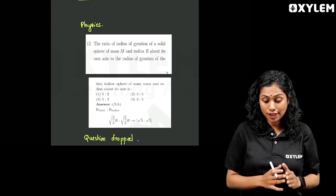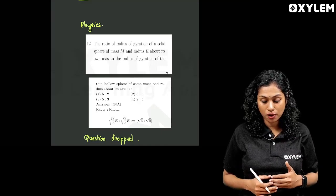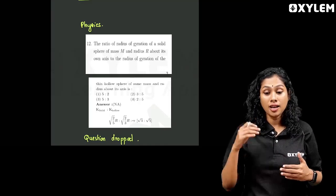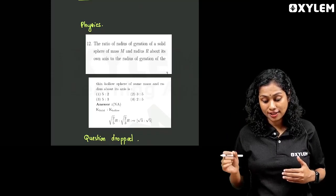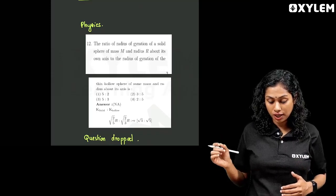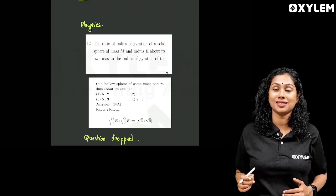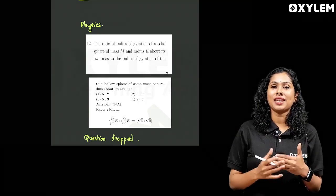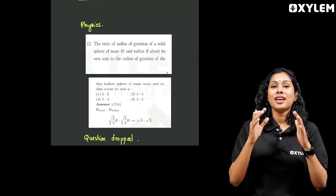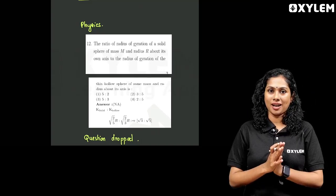In Physics, the question is: 'The ratio of radius of gyration of a solid sphere of mass M and radius R about its own axis to the radius of gyration of the thin hollow sphere of the same mass and radius about its axis is' - this question. Not one answer is correct in this. This question has been dropped.